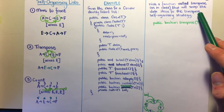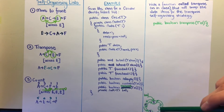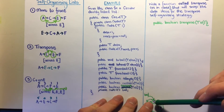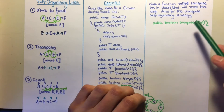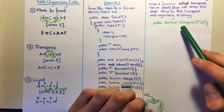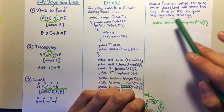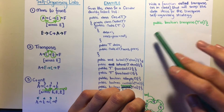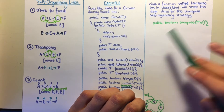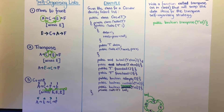The task is to write a function called transpose that swaps data items for the transpose self-organizing strategy. We only need to swap the actual data items, not relocate entire nodes. The function returns a boolean — true if the element was found in the list, false if it was not.